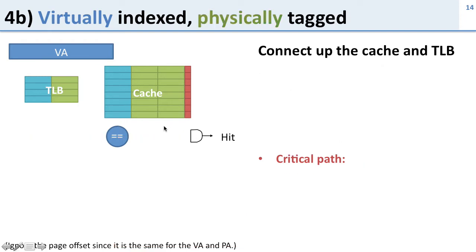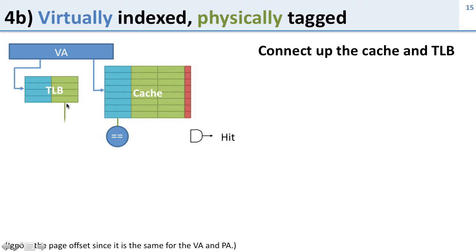Now let's look at a virtually indexed, physically tagged (VIPT) cache. We put the virtual index into the cache but now we get a physical tag out. To compare the physical tag we also send the virtual index into the TLB to get the physical tag, then we compare them. Combined with the valid bit, this tells us whether we have a hit.